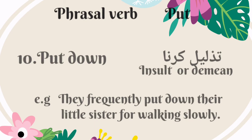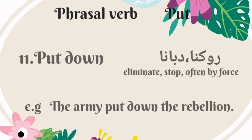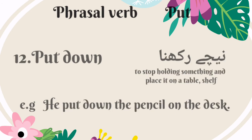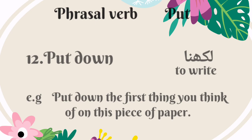The tenth phrasal verb is 'put down.' It means to insult or demean — Urdu mein is ka matlab hai kisi ki tazleel karna. For example: they frequently put down their little sister for walking slowly. 'Put down' also means to eliminate or stop by force — Urdu mein is ka matlab hai zhor jberdasti se rokna ya davana. For example: the army put down the rebellion. It also means to stop holding something and place it on a surface — for example: he put down the pencil on the desk. Additionally, 'put down' means to write — Urdu mein is ka matlab hai likhna. For example: put down the first thing you think of on this piece of paper.